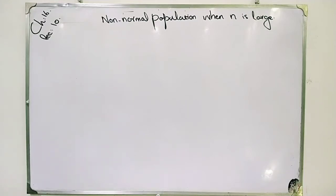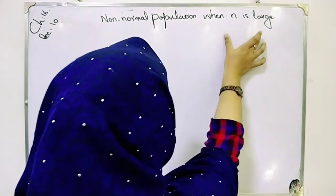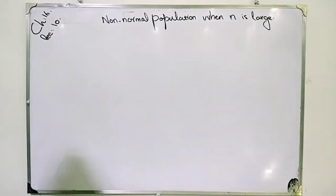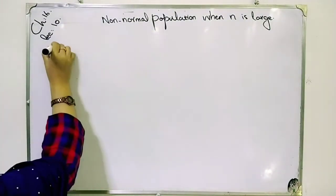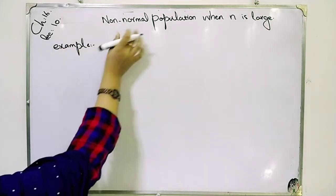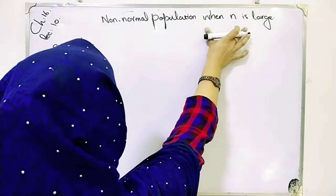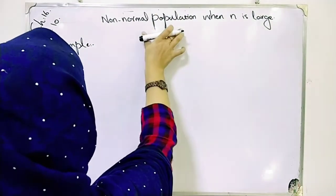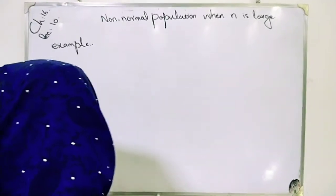Bismillahirrahmanirrahim students, our example is non-normal population when n is large. I am doing this example so that you have the concept of non-normal population when n is large.